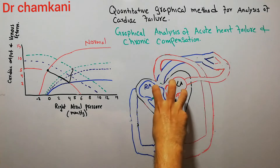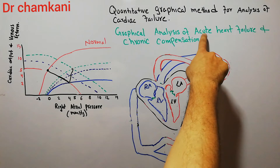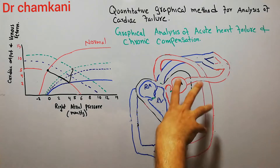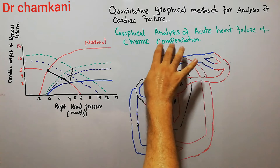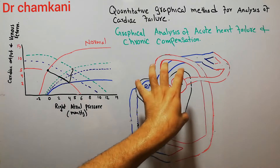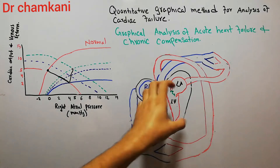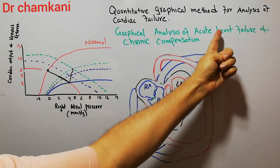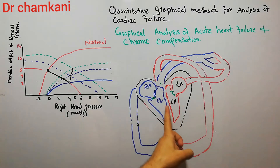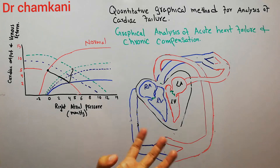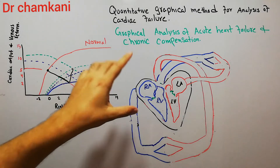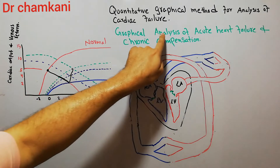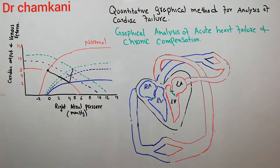In simple words, acute heart failure occurs when the heart suddenly fails — sudden acute failure of the heart — and the heart is unable to pump enough blood to satisfy the needs of the human body. Then with the passage of time, some compensation occurs; the heart regains its ability to pump blood. Initially there is acute heart failure, and then compensation occurs. This is the graphical analysis of acute heart failure and chronic compensation.